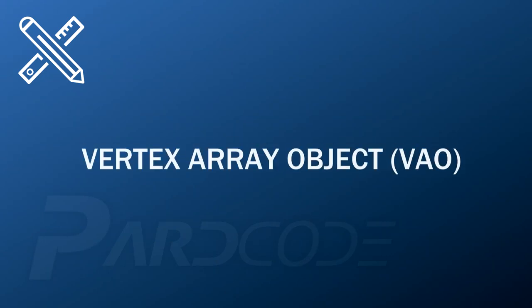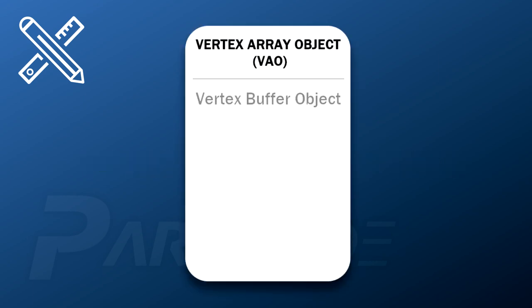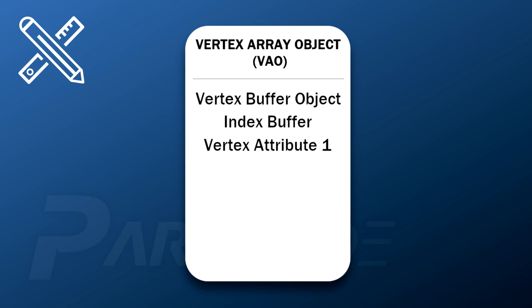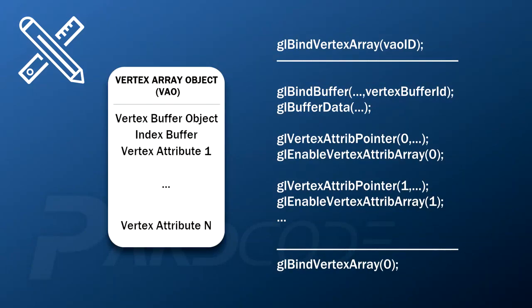There is one other object to take care of: the vertex array object. In OpenGL, a vertex array object stores all information needed to supply vertex data — it stores references to vertex buffer objects, index buffer objects, vertex attributes, and so on. To store the various data, we enclose all the relevant functions — gl bind buffer, gl buffer data, gl vertex attrib pointer — between gl bind vertex array, passing the VAO ID, and gl bind vertex array with 0 to unbind it.